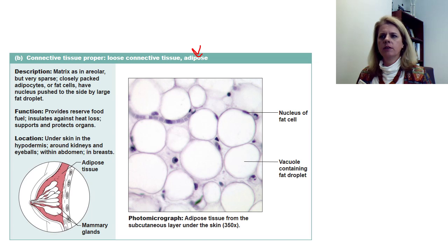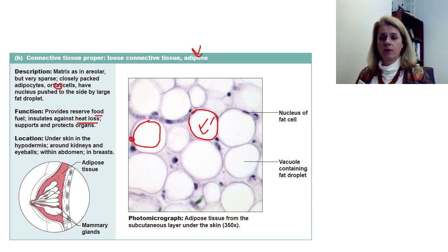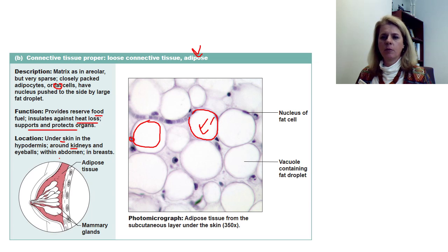Adipose is another example of loose connective tissue — this is fat. Adipocytes are the names of the fat cells. Each adipocyte is basically a big bubble of fat so large it pushes the nucleus to the side. We use fat to reserve food — like a bear putting on fat before hibernation. Fat helps prevent heat loss, and supports and protects our organs like a cushion. You'll find fat under the skin, around your organs, around your eyeballs, in your abdomen, and in the breast. It's pretty much everywhere — protection, support, food reserve, and heat retention.